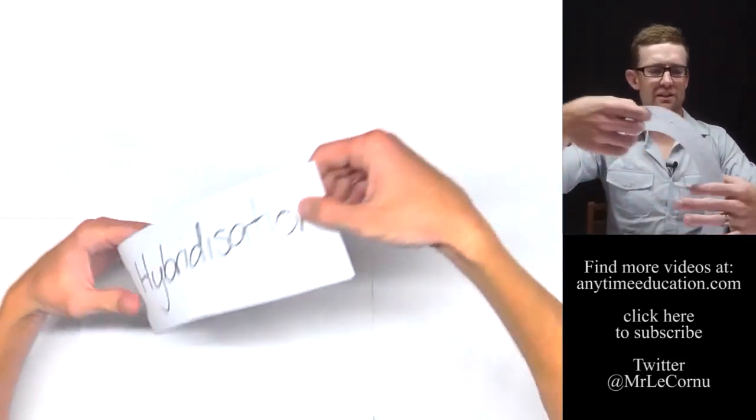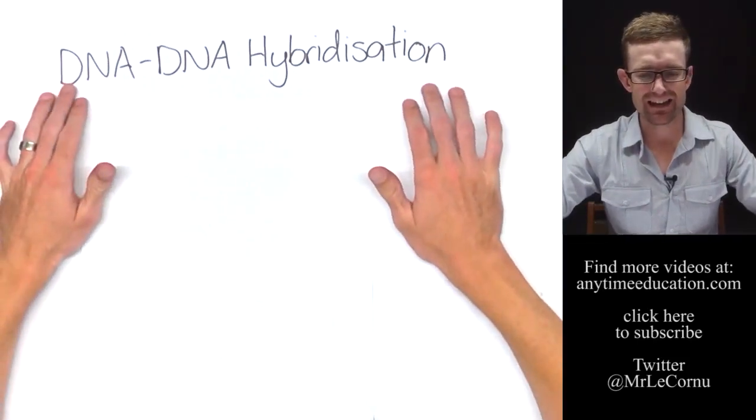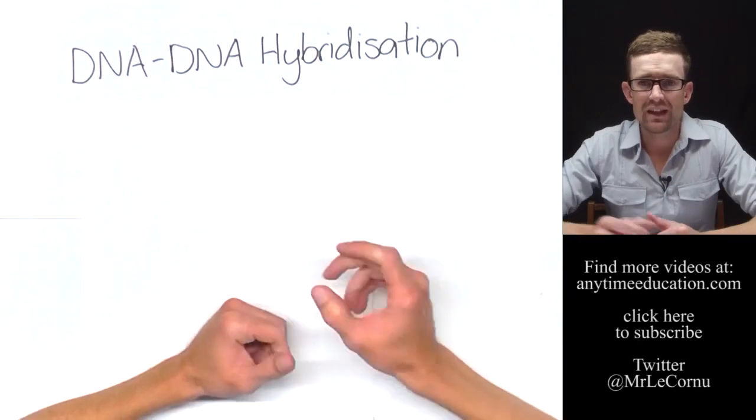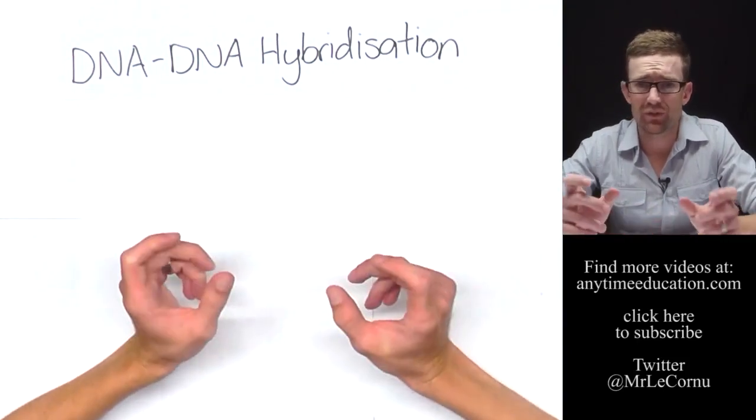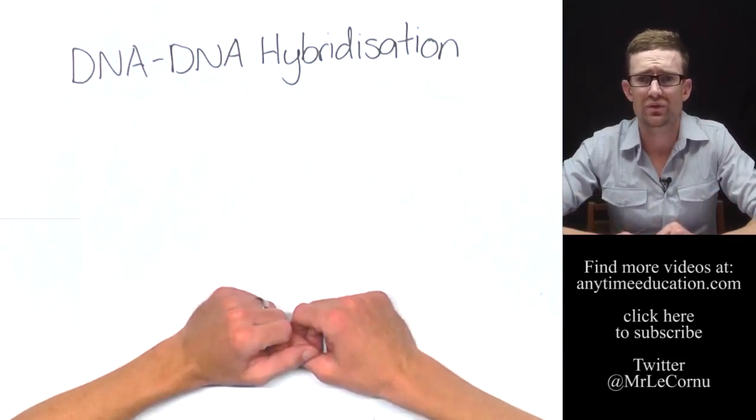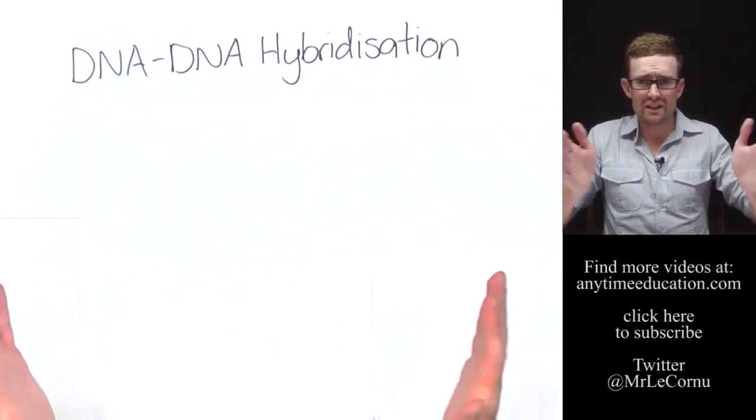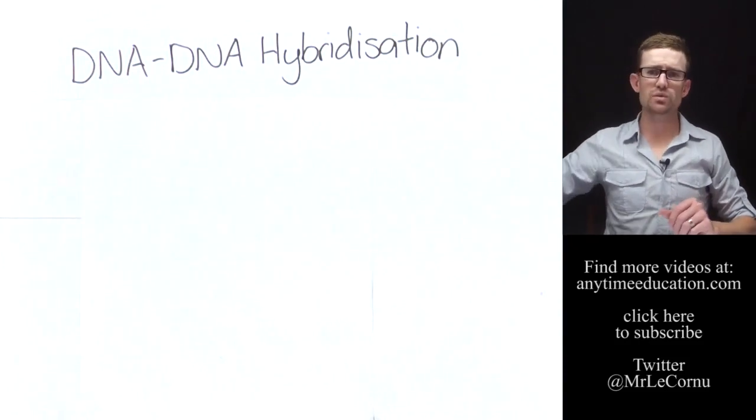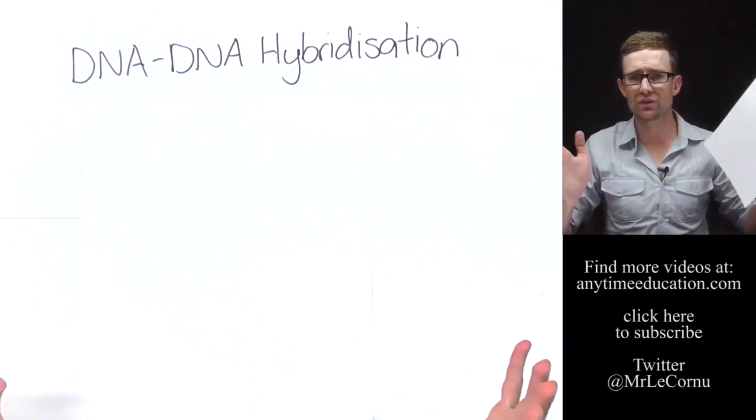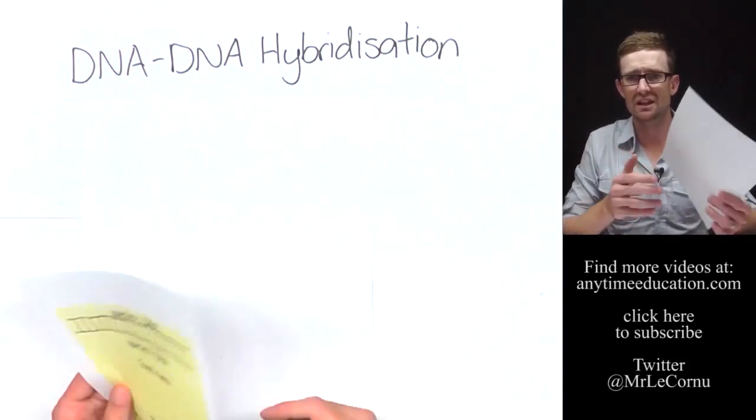the other technique that scientists can use is called DNA-DNA hybridisation. And that's where they take a sample of DNA from the same region, from two different species, mix them together, heat them up so that their double strands separate, and then cool them down so that some of the strands from the different species will actually come together.